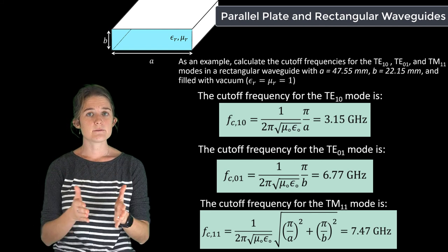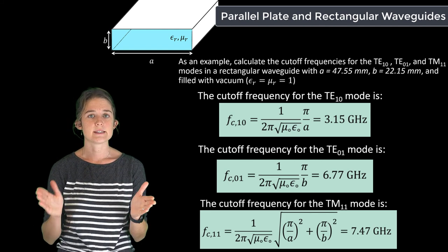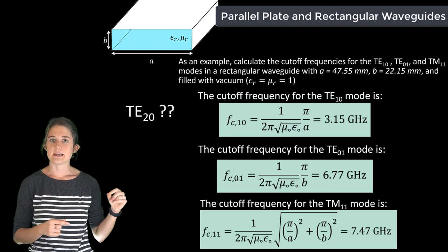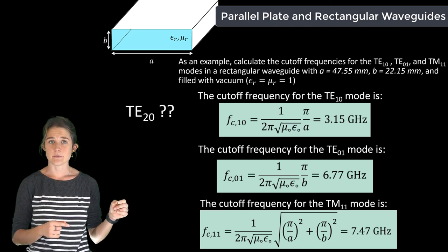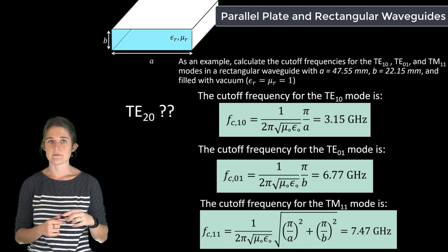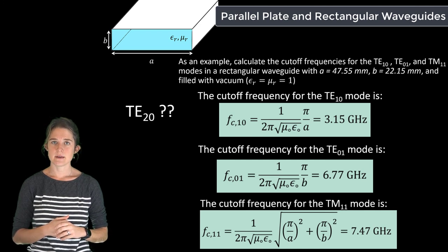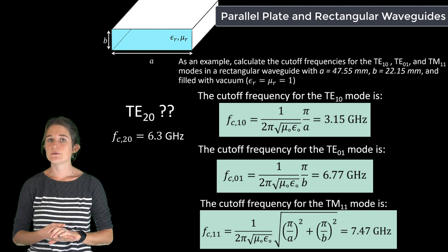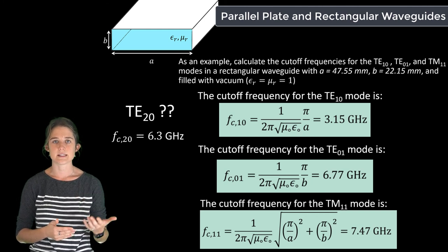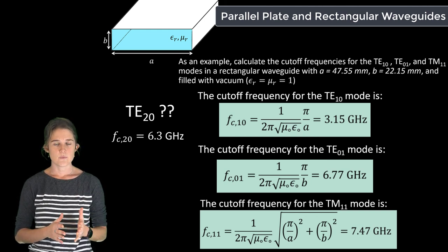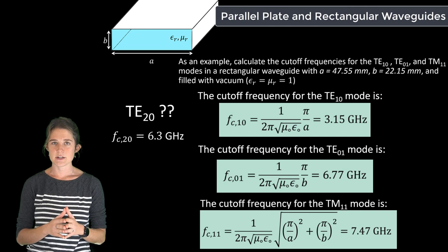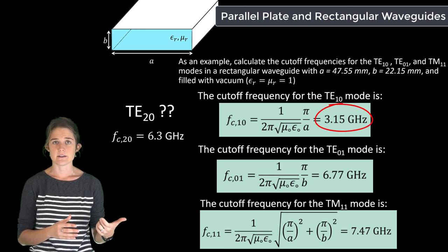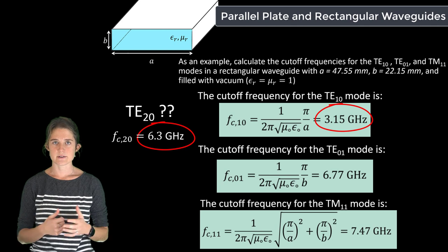Also note that to find the bandwidth of single mode operation, we should check the cutoff frequency for the TE20 mode, which may be lower than that for the TE01 mode. It turns out that the TE20 mode has a cutoff frequency of 6.3 gigahertz, which means the band of single mode operation for this waveguide is from 3.15 gigahertz to 6.3 gigahertz.